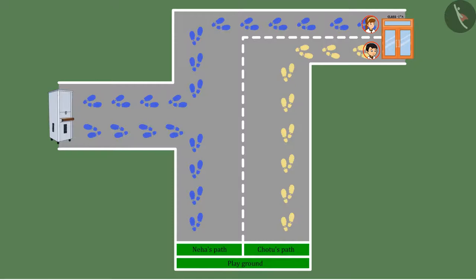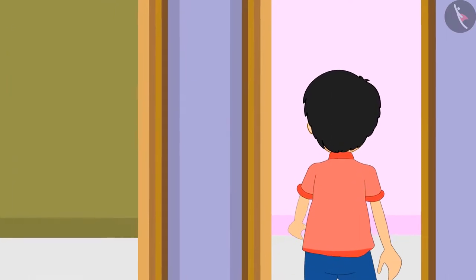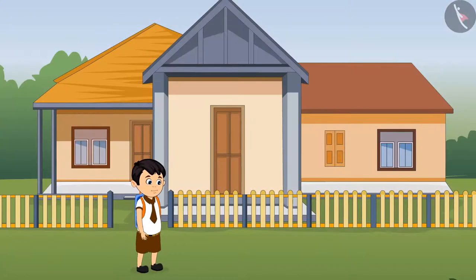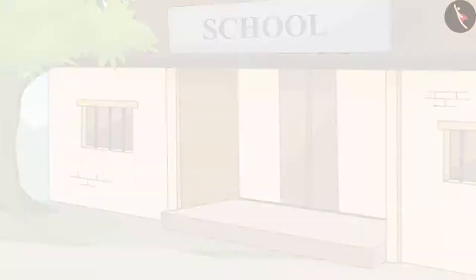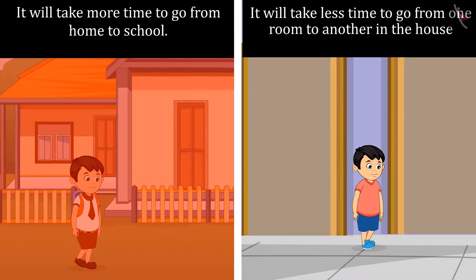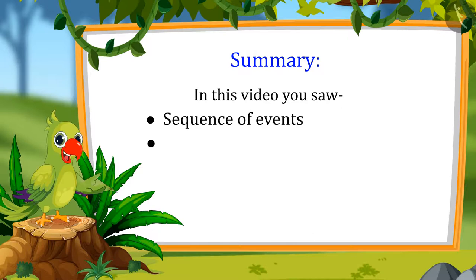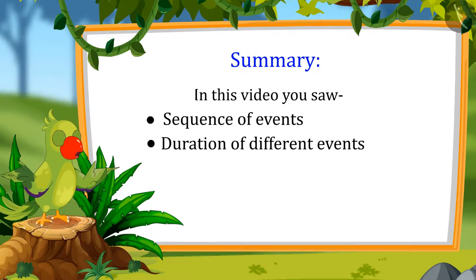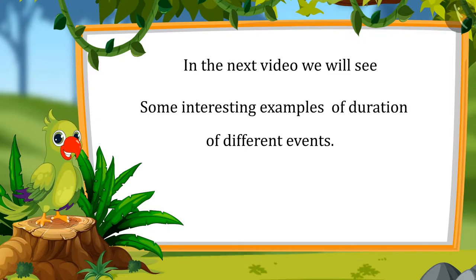Children, what will take longer — going from one room to another in your house, or walking from your home to your school? You guessed it right, children. You will take more time from your home to school because you will have to walk more to get there. So kids, that's all for today. In this video, you learned the order of activities and learned to compare the time taken in different activities. In the next video, we will see some interesting examples of comparing time taken in different activities.